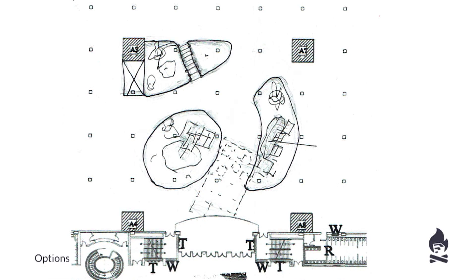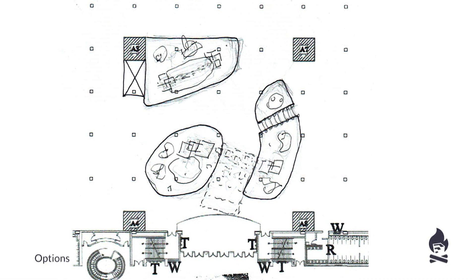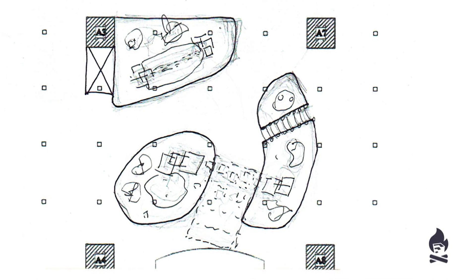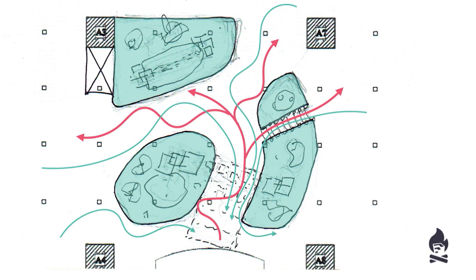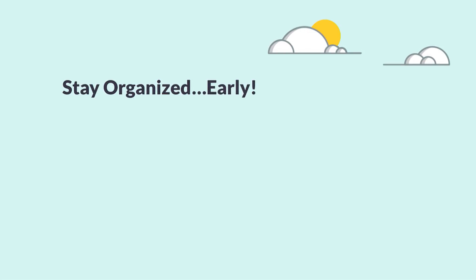Throughout the process we were always not just thinking in plan but about what the experience would be from several different directions. We landed on a floor plan because it gave people the ability to meander and spread from the main entrance, while also having everyone return to the same starting point. Early on in SketchUp we were orbiting and navigating to feel what it would be like from all angles. The biggest tip early on from the hand sketch: stay organized really, really early.